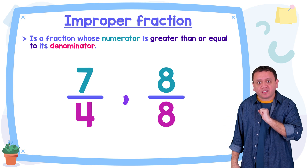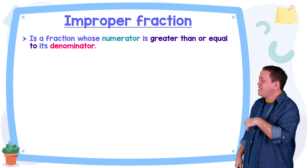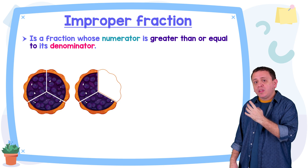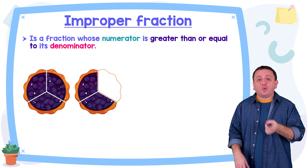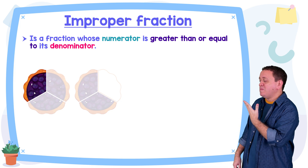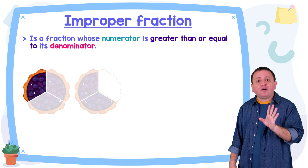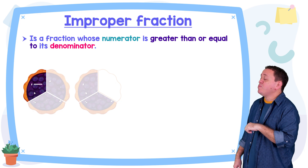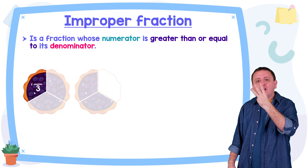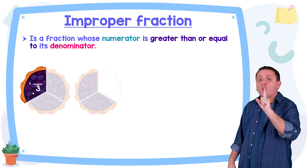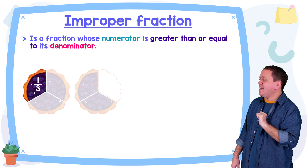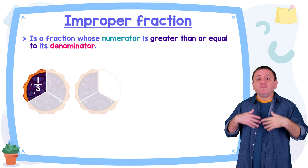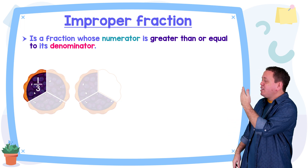Now it is time to solve an exercise. Pay attention to the following image. How many blueberry pies do we have? To get the answer, we're going to focus on one slice of the first pie. What fraction of the pie would this slice represent? We have divided this pie into three equal parts, three equal slices, and we took one of those parts — one of three equal parts. Therefore, this slice represents one third of the pie.